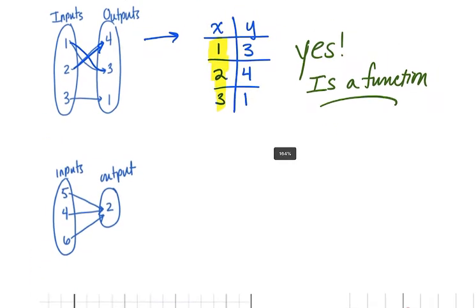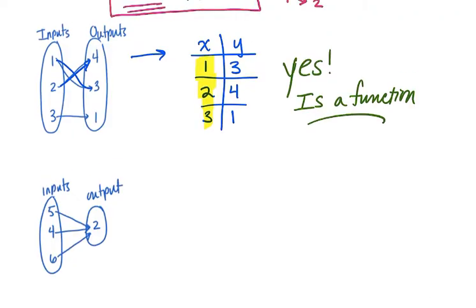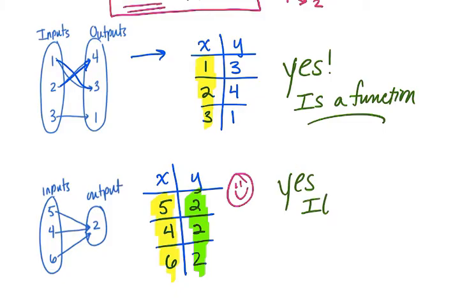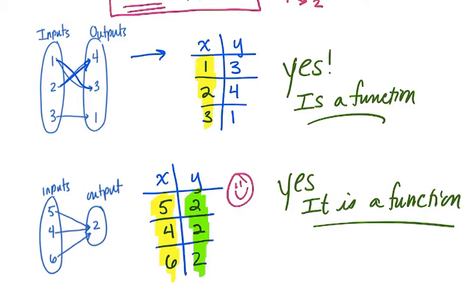Here's another mapping diagram. If I turn it into an input-output table: 5 goes with 2, 4 goes with 2, and 6 goes with 2. You might think this isn't a function because the output 2 repeats, but it is okay if the y-values repeat — that is not a problem. If each input is different (5, 4, and 6), you do have a function. Each input has exactly one output; it just happens those outputs are the same.